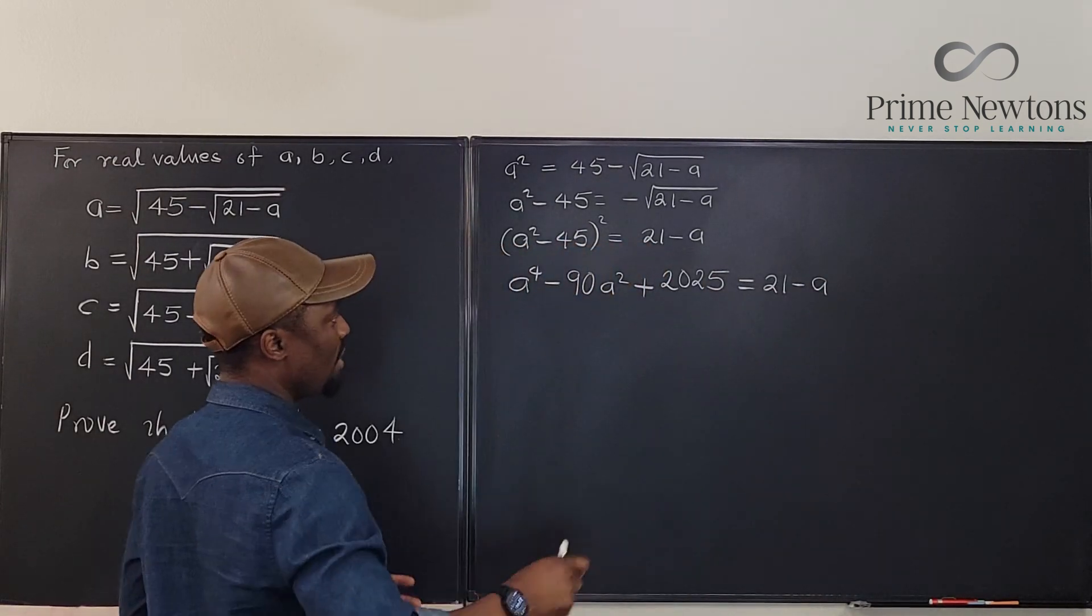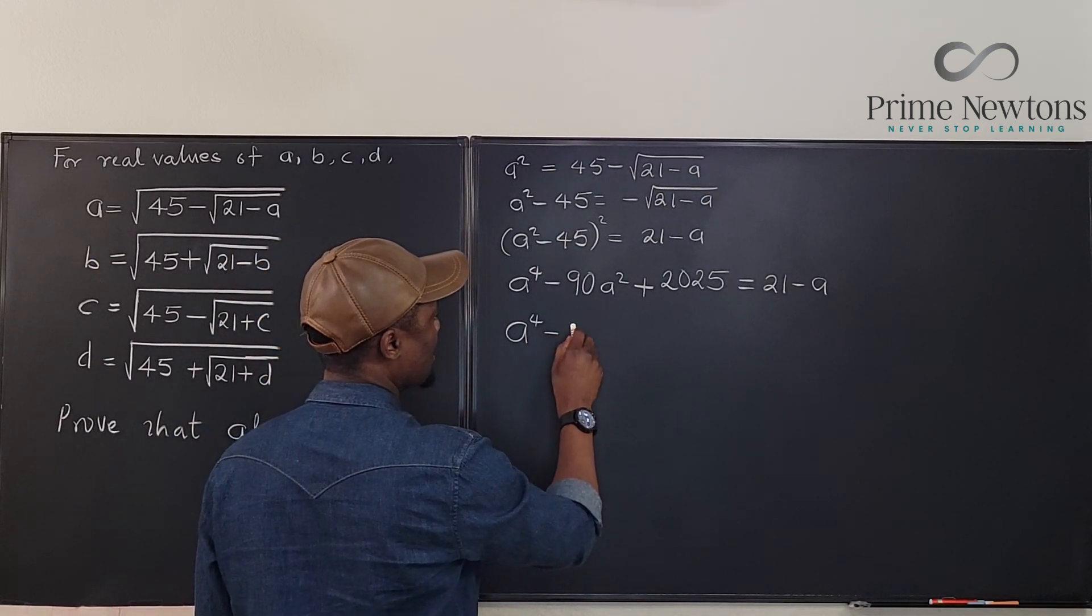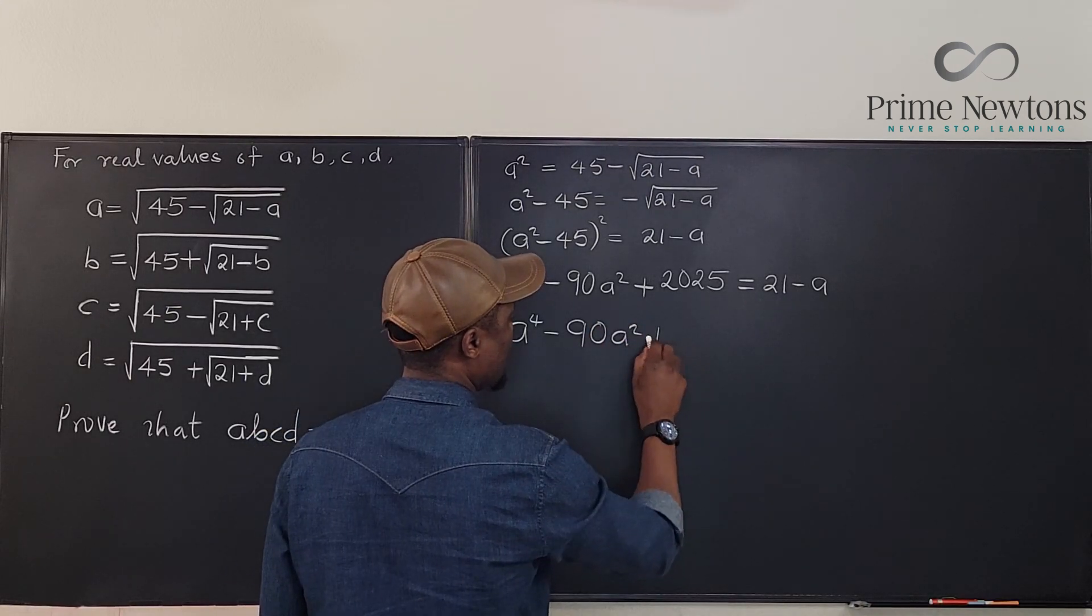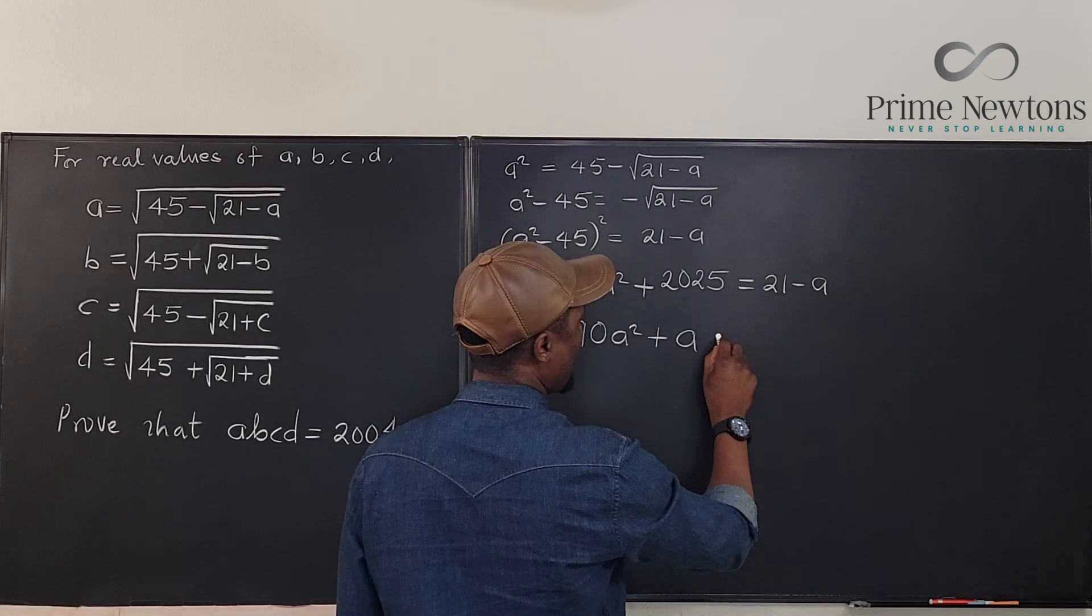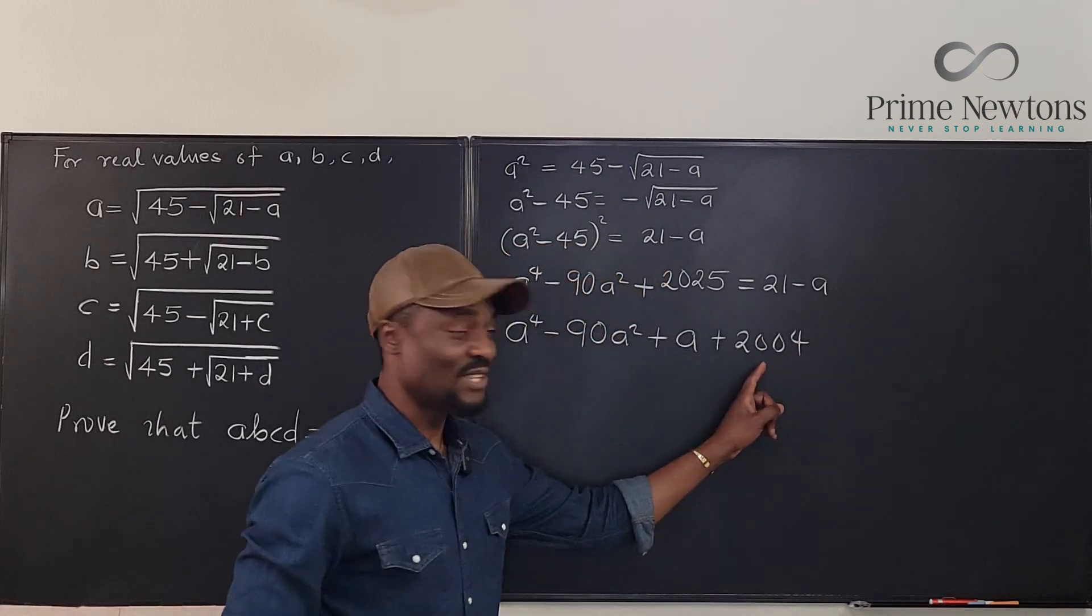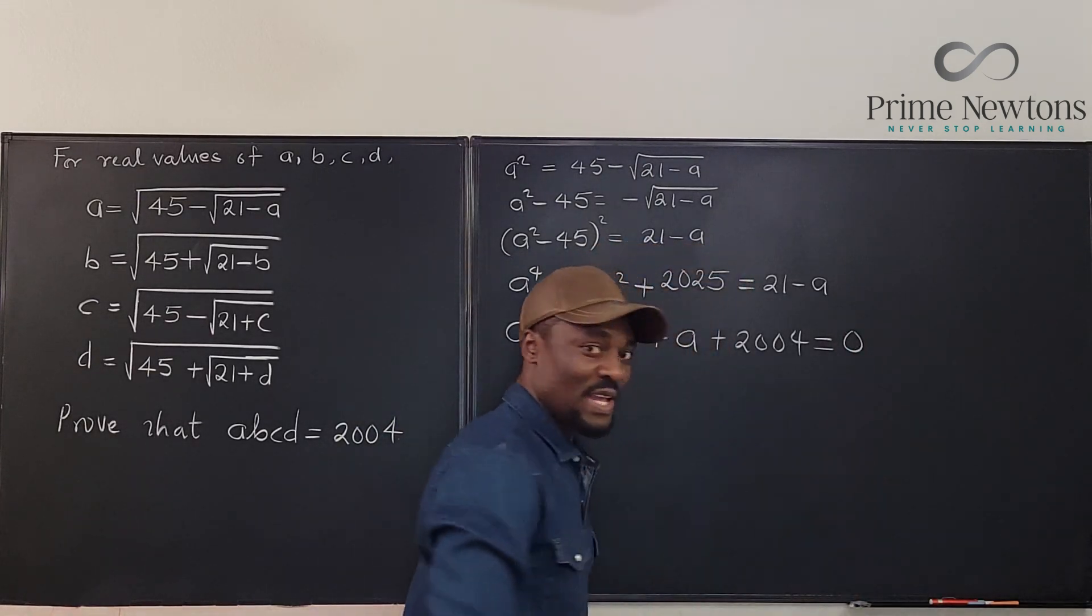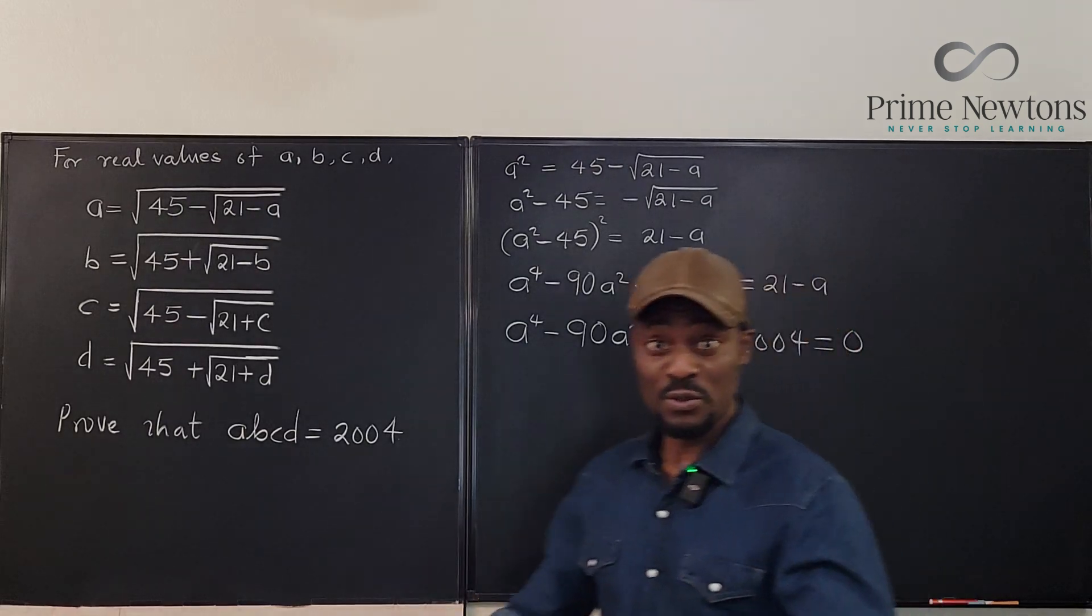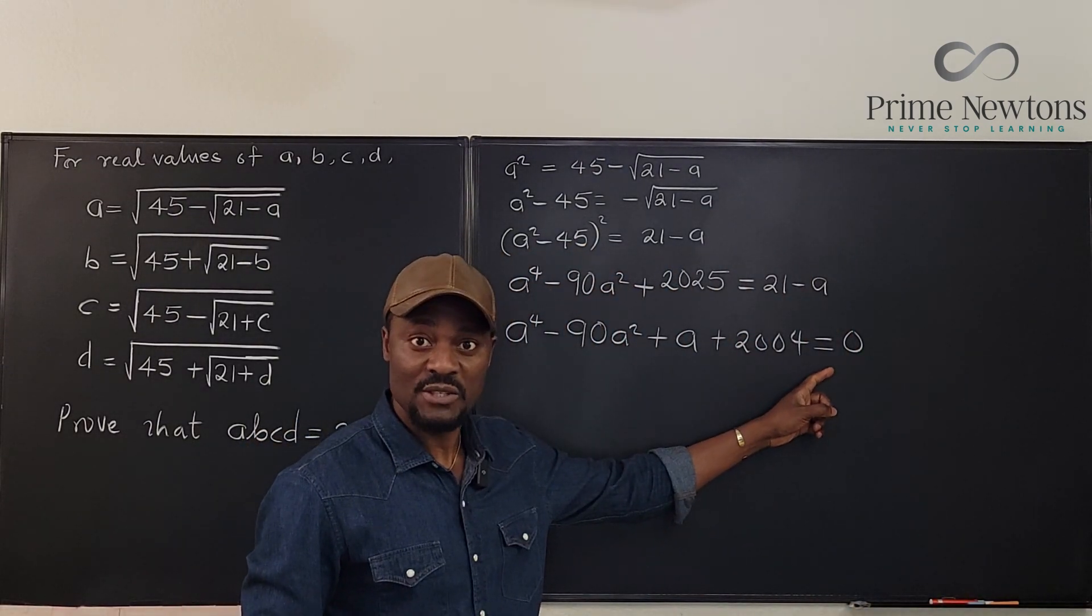And we can actually distribute this minus 90 A squared plus 2025 equals 21 minus A. Let's form a polynomial. We're going to have A to the fourth minus 90 A squared plus A. If we bring these two together, we're going to get plus 2004. That is the 2004 we're looking at. So this looks like A is the root, is one of the roots. Remember, you're supposed to get four roots. It's one of the four roots of this polynomial equation.